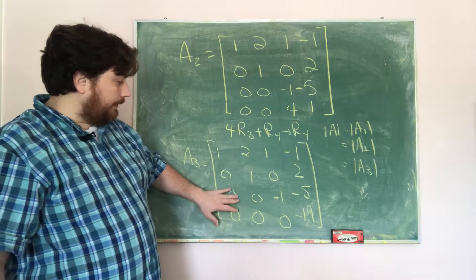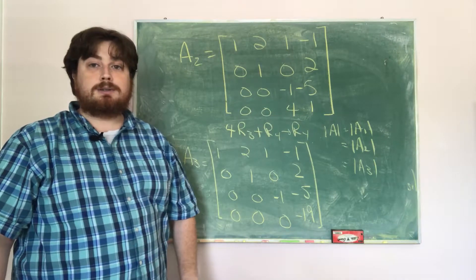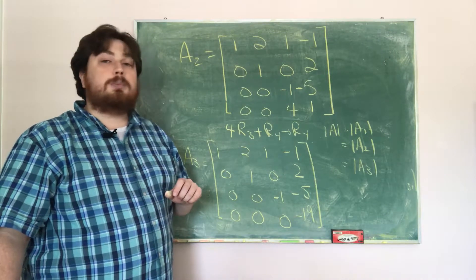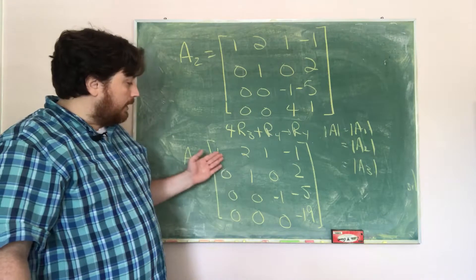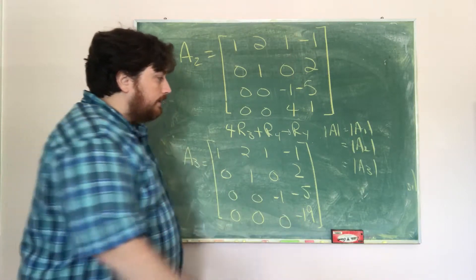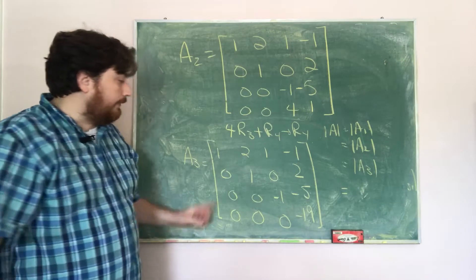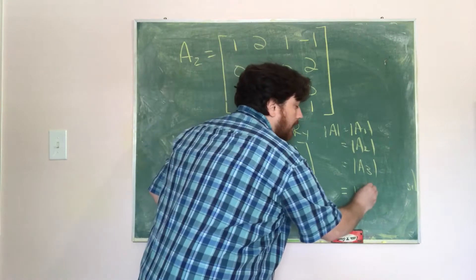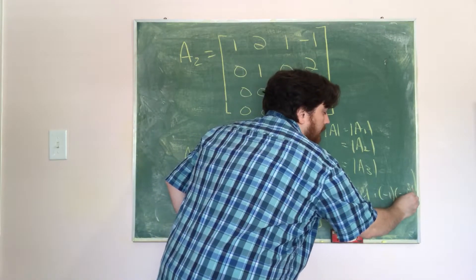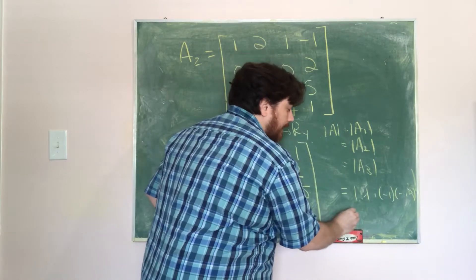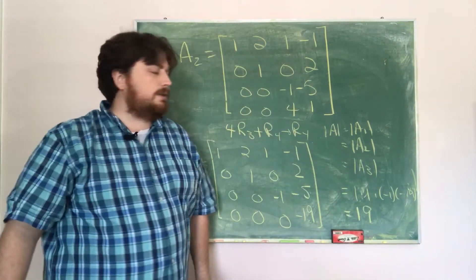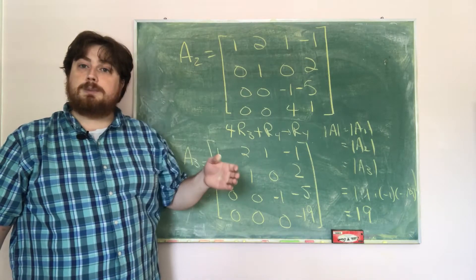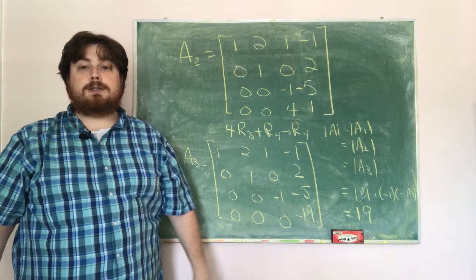Since A3 is an upper triangular matrix, to find its determinant I just multiply the entries on the diagonal: 1 times 1 times negative 1 times negative 19. Negative 1 times negative 19 gives positive 19. So the determinant of A3 is 19, which means the determinant of each previous matrix, and finally the determinant of our original matrix, is 19.